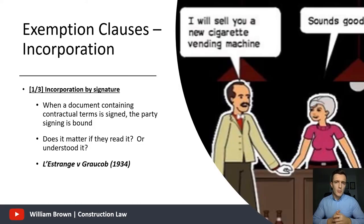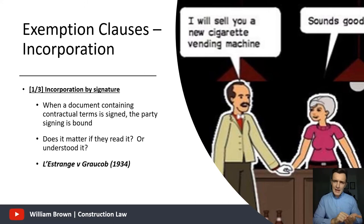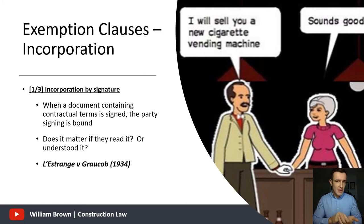Starting then with incorporation via signature. Of the three mechanisms, this is probably the most straightforward. If a written contract is drafted, it contains an exemption clause, and it is subsequently signed by the other party, it does not matter whether or not they read that exemption clause or whether they understood it — if they sign up to it, it is incorporated as part of the agreement. The logic is that it gives certainty to everyone: if you have signed it, you are deemed to have read it and understood it, and the exemption clause is incorporated.